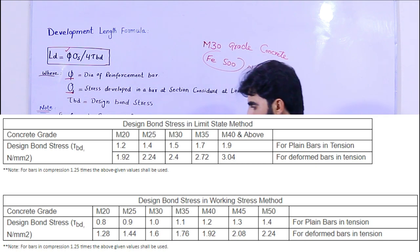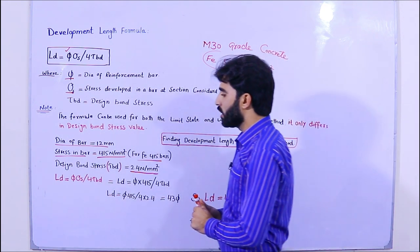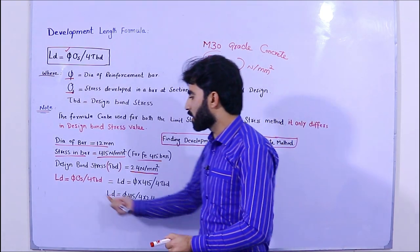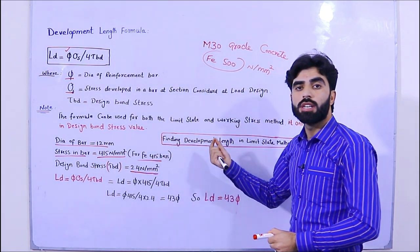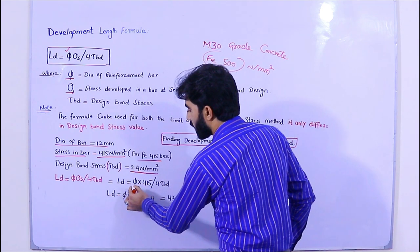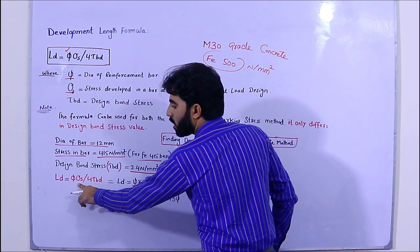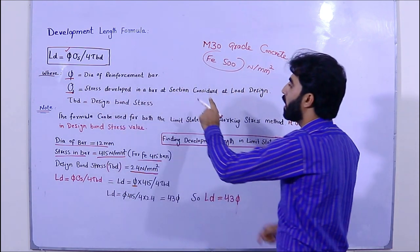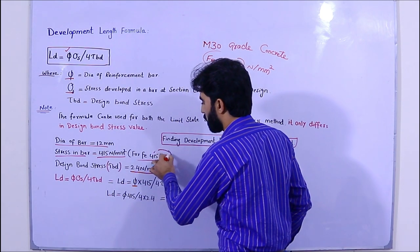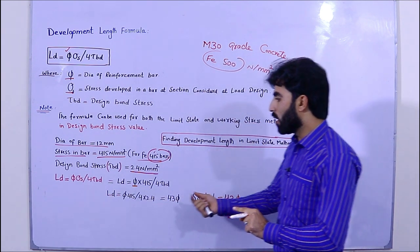You should have knowledge about this graph and this table. The formula is: Ld = φ · σs / (4 · τbd). We have everything here, so now it is easy to calculate the development length for a 12 mm bar in M30 grade concrete. Ld = φ · 415 / (4 · τbd). Here σs is 415 N/mm², which is the strength of the steel rod, and τbd is 2.4 N/mm² from the table for the limit state method.